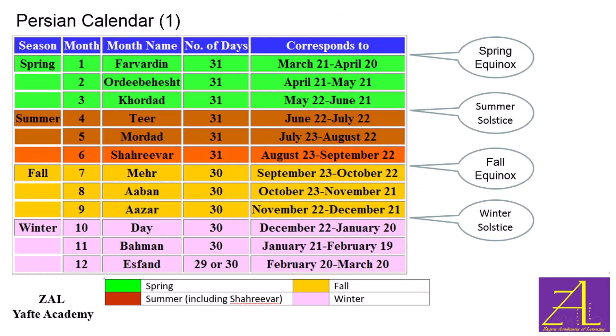The Persian calendar is a solar one that has a one-to-one match with the calendar we use in the US, as shown here. It starts on March 20 or 21 every year for 365 days, and is designed according to the seasons in the Northern Hemisphere.